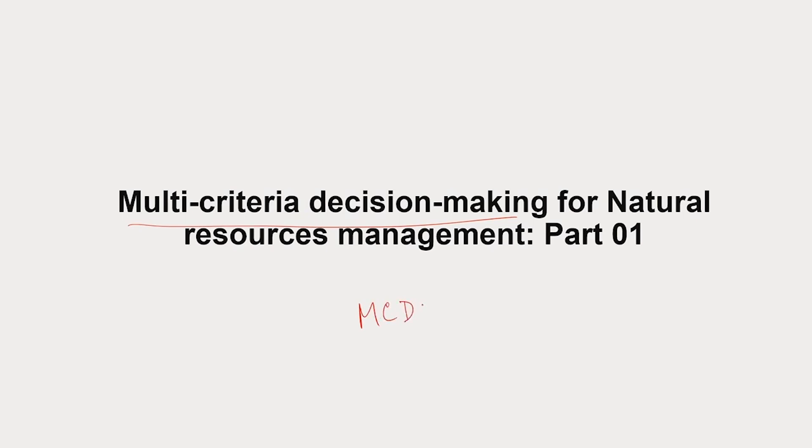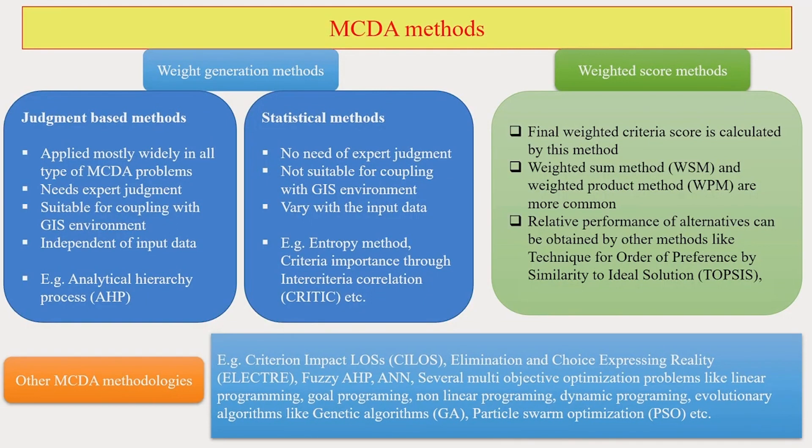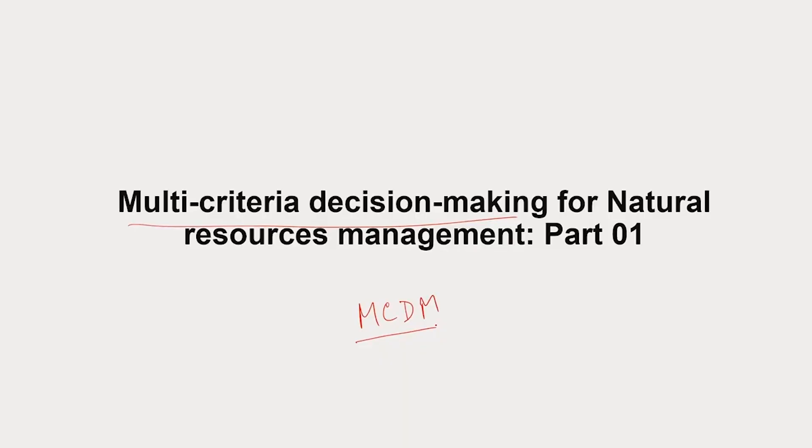We have already discussed the introductions of MCDM — Multi-Criteria Decision Making. For natural resources management, we discussed in the introductory lecture how it works and what the different aspects are. We talked about different processes and methods like AHP — Analytical Hierarchical Process. Today, in this Part 1 of MCDM on natural resource management, we will be discussing in a little more detail how particularly MCDM actually works.